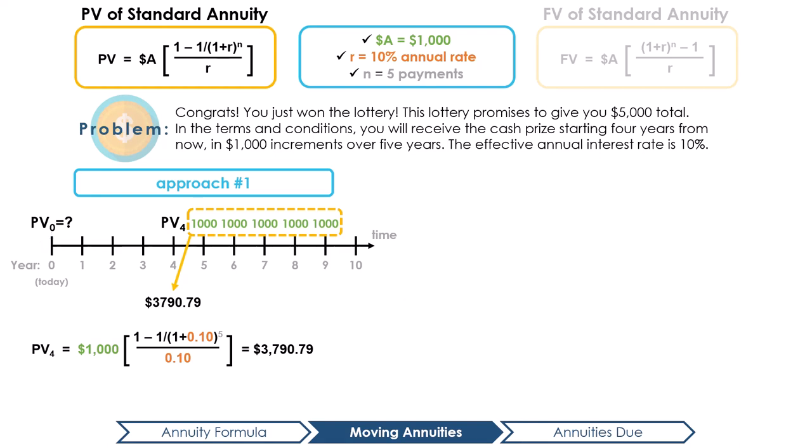After discounting $3,790.79 by 4 years, the value of the annuity in today's dollars is $2,589.16. Notice how, although you technically receive five times $1,000, the actual value of these cash flows is worth only $2,589.16 due to the time value of money.